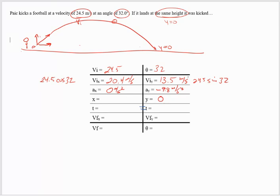Looking at these, I have a certain set of variables. It looks like I'm going to use Y equals VIT plus one half AT squared. My Y displacement is zero, my Y initial velocity is 13.5, I'm looking for T plus half of the negative 9.8 T squared.